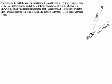What we've been given is a question which says: The sketch on the right shows a ship travelling with constant velocity 10i plus 5j, which is this one. The path of the ship will take it past a fixed offshore drilling platform at P.